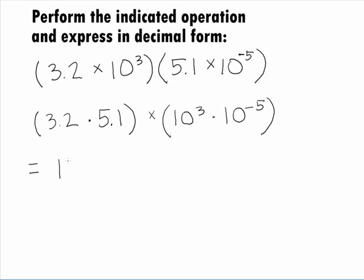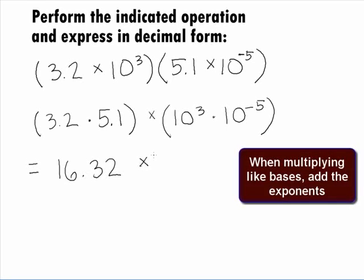3.2 times 5.1 equals 16.32 and adding our exponents together on 10, we get 10 to the negative 2 power.